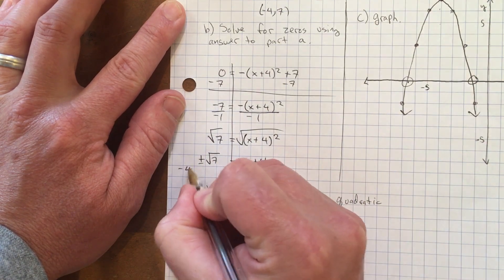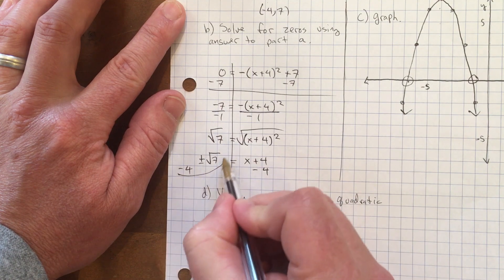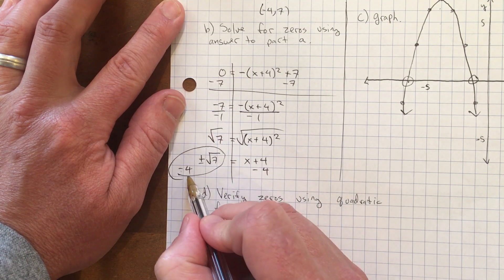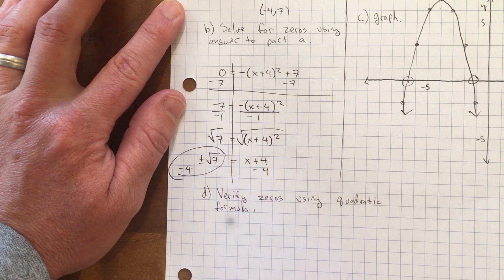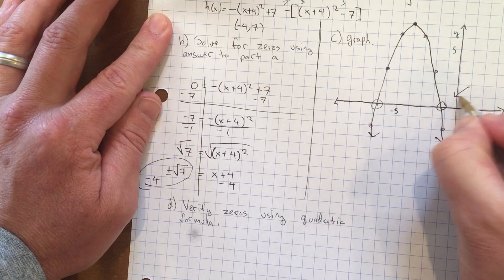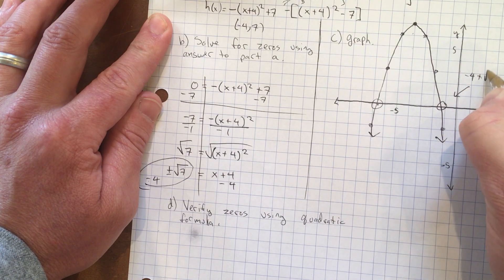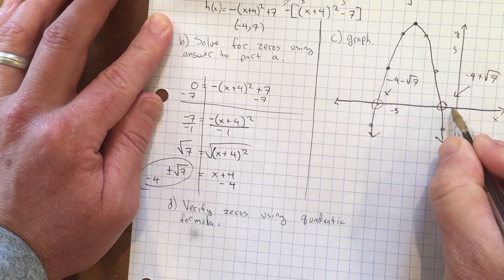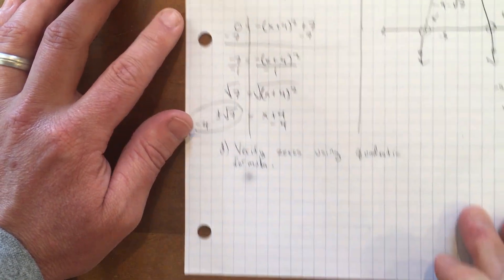I'll subtract 4 from each side, so the answer is x = -4 + √7 and the other answer is x = -4 - √7. I think -4 + √7 is here and this one is -4 - √7, so we have those two zeros.